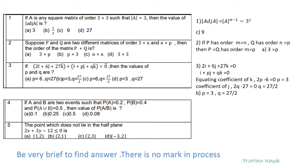Question number 4 from probability: if A and B are two events such that P(A) = 0.2, P(B) = 0.4, P(A∪B) = 0.5, find P(A|B). First we compute P(A∩B) = P(A) + P(B) − P(A∪B) = 0.2 + 0.4 − 0.5 = 0.1. Then P(A|B) = P(A∩B) / P(B) = 0.1 / 0.4 = 1/4 = 0.25.